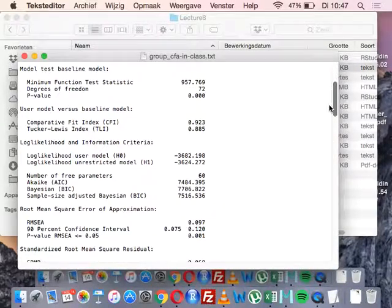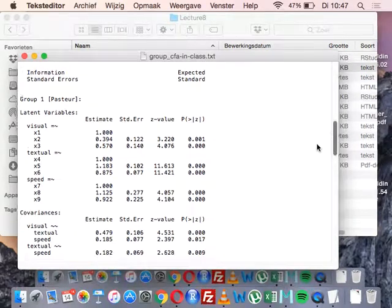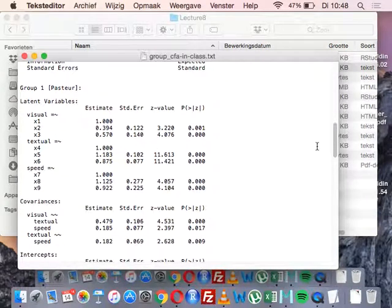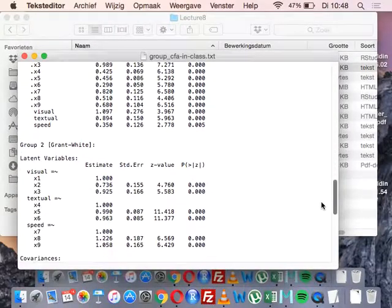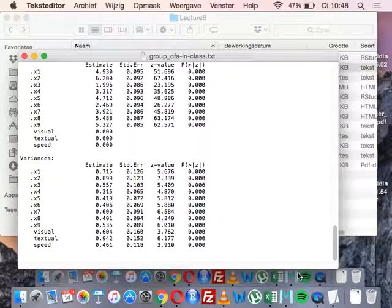A whole bunch of things in between. What it will then do is print for group one and for group two. Those factor loadings for the Pasteur school and for the Grant White school are printed separately. So we can then visualize them and see if it looks very differently for group one than for group two. Massive output file again. Drowning in data.